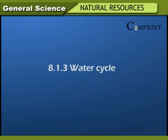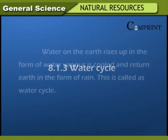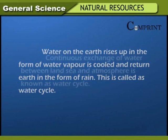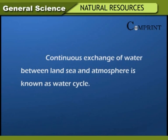Water cycle: Water on the earth rises up in the form of water vapor, is cooled, and returns to earth in the form of rain. This is called the water cycle. Continuous exchange of water between land, sea, and atmosphere is known as the water cycle.